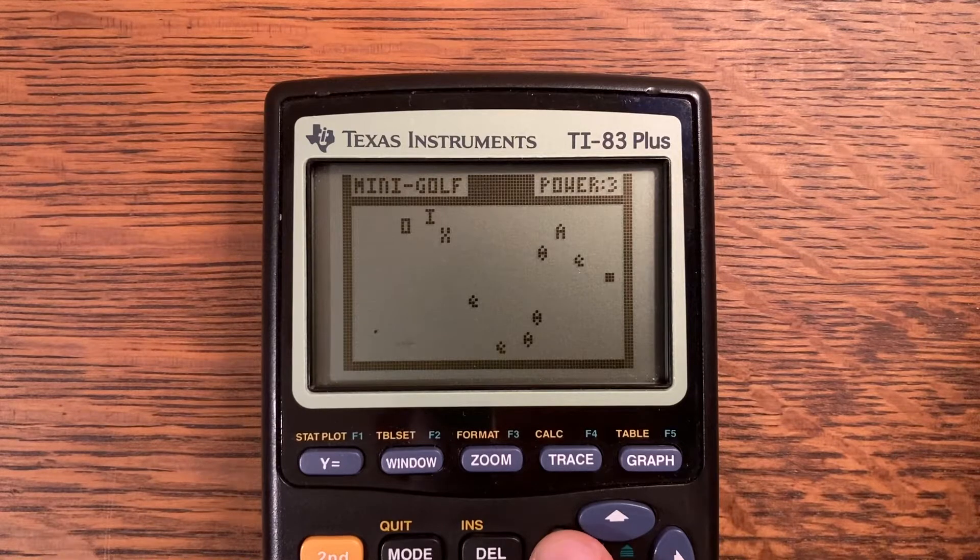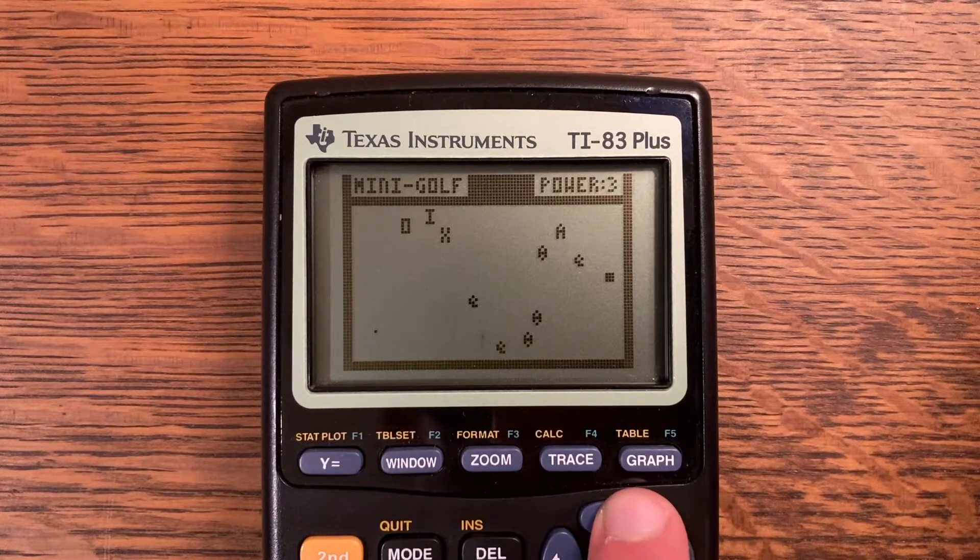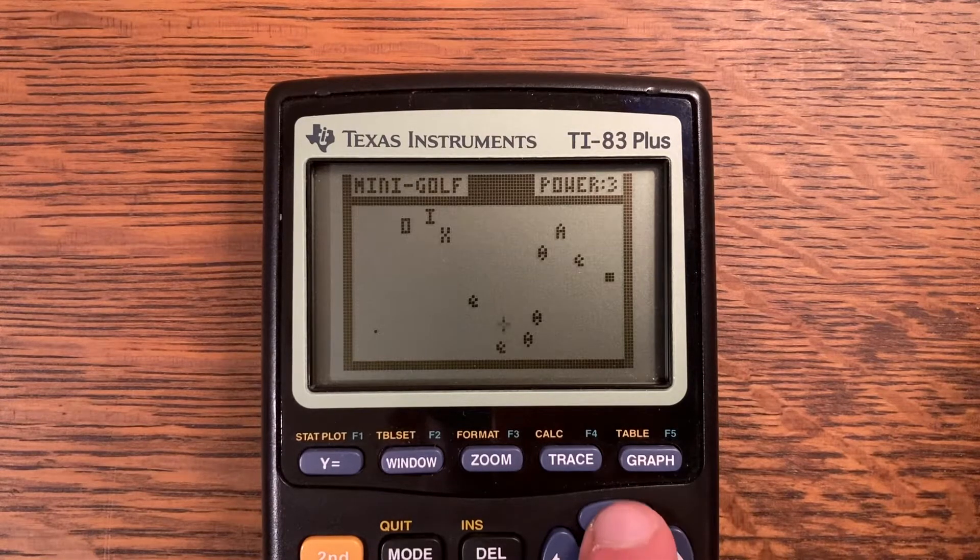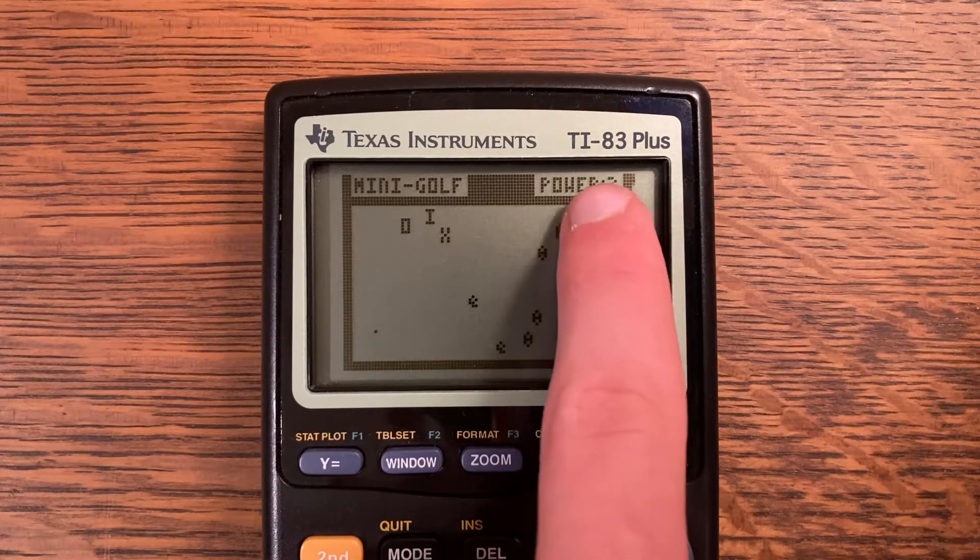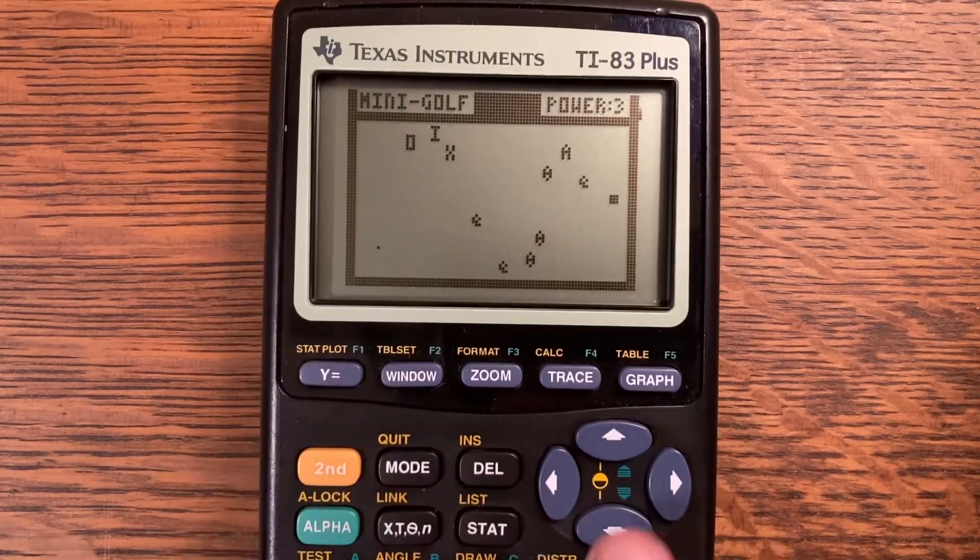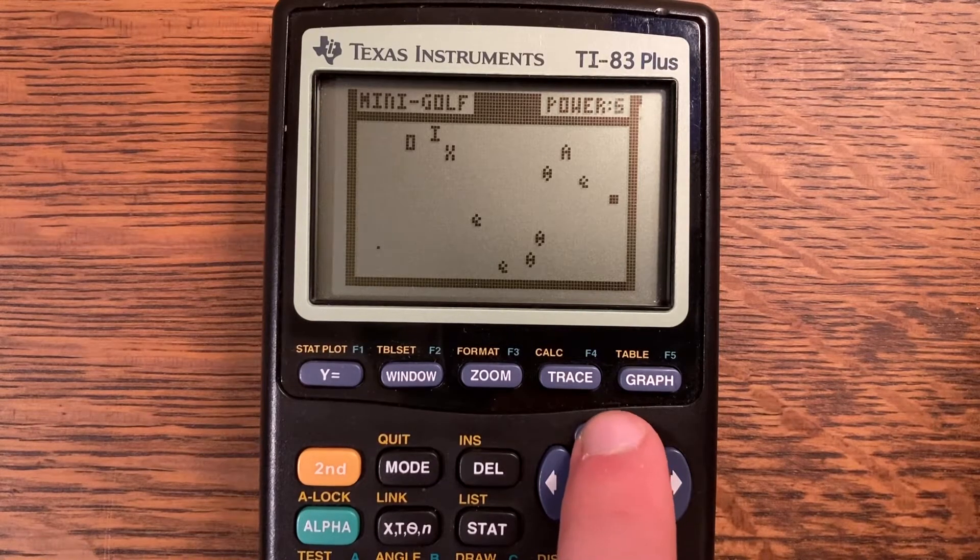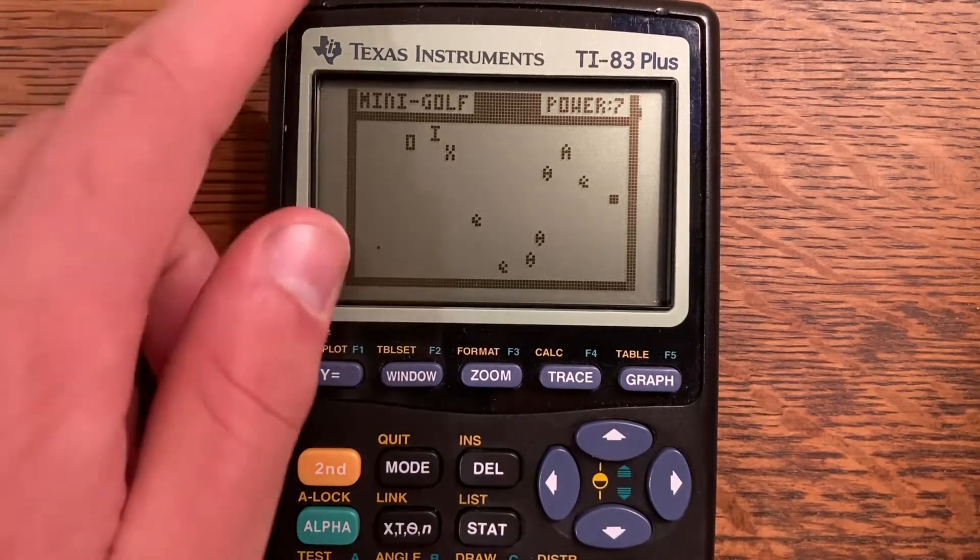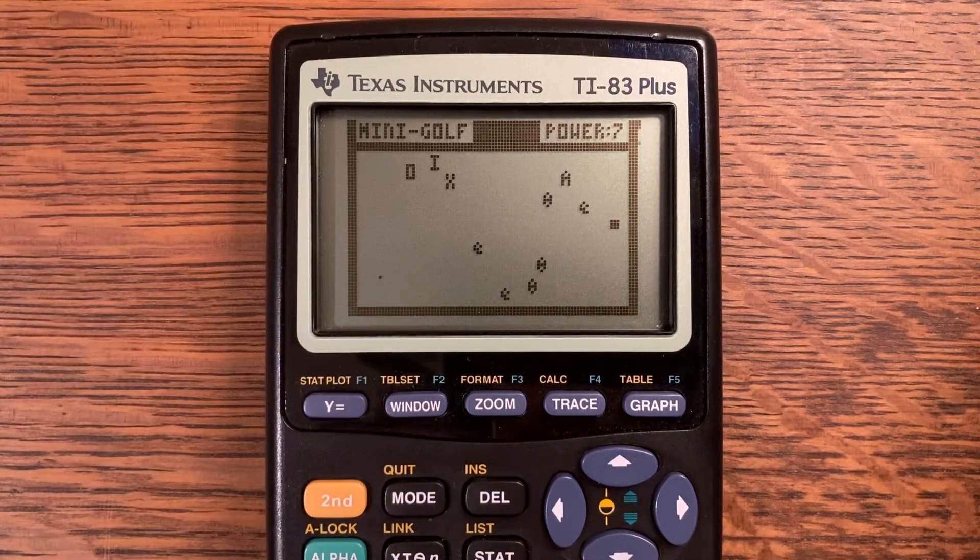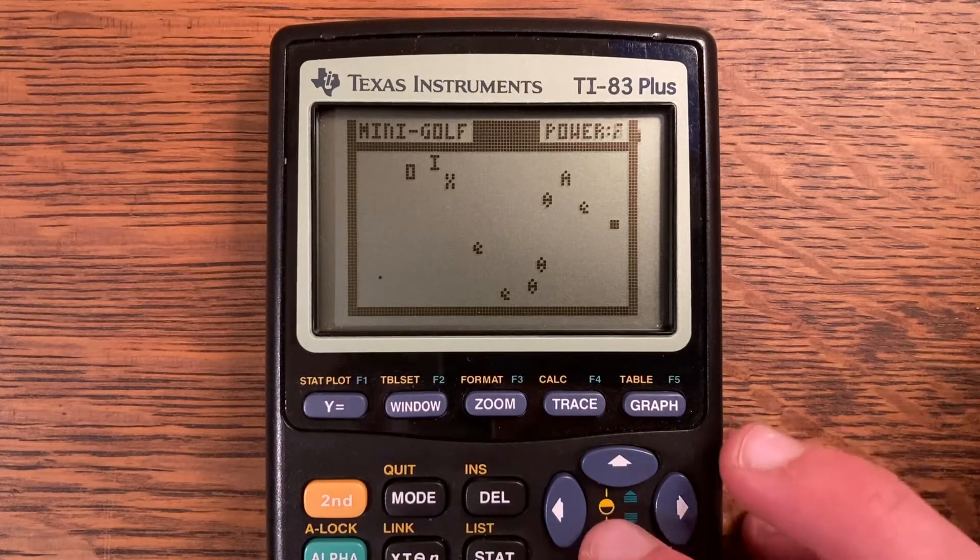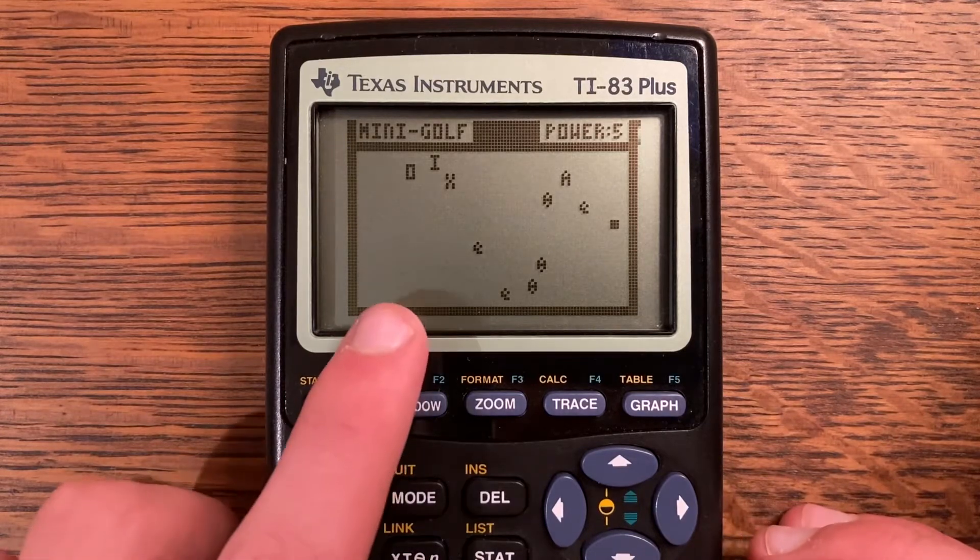You can aim anywhere you want. I'm going to try and aim and see if I can go a little bit higher here. Then you will click enter when you're satisfied with whatever angle you have. And then you get to select your power by using the up and down arrows. As you can see, when I press up the power does go up, and when I press down the power goes down. I will explain what power does a little bit later.